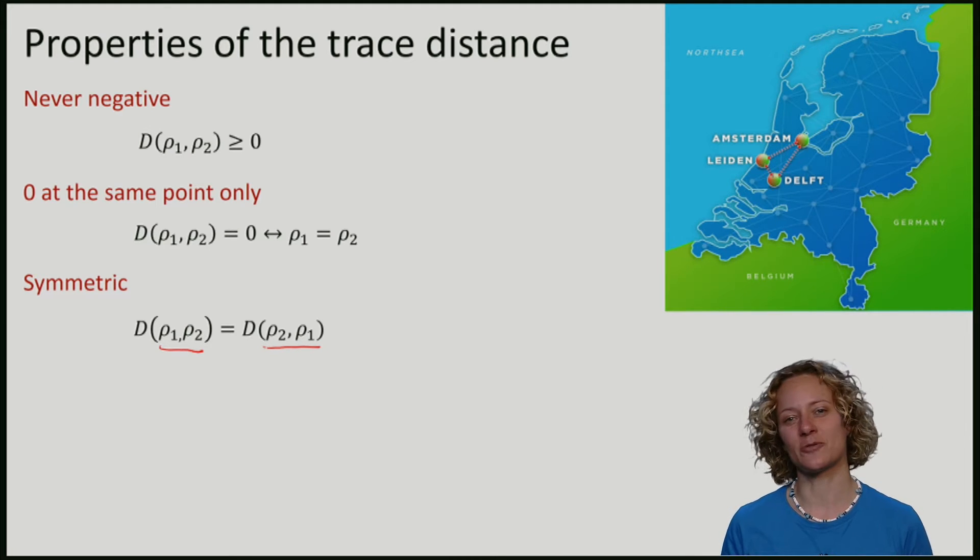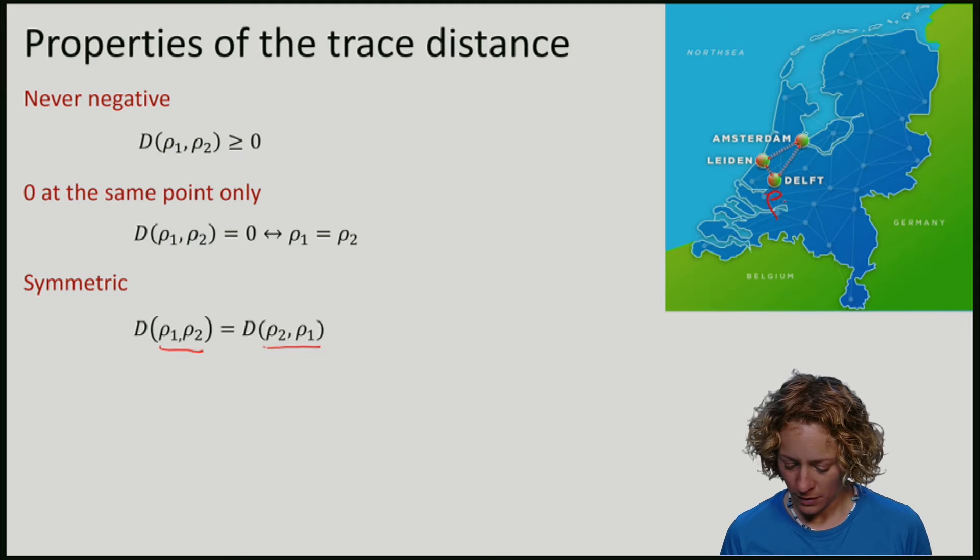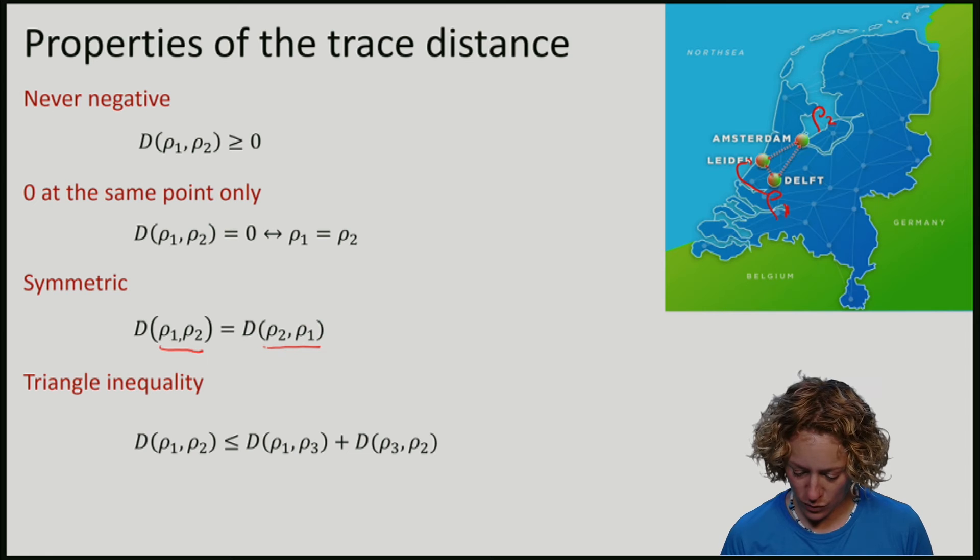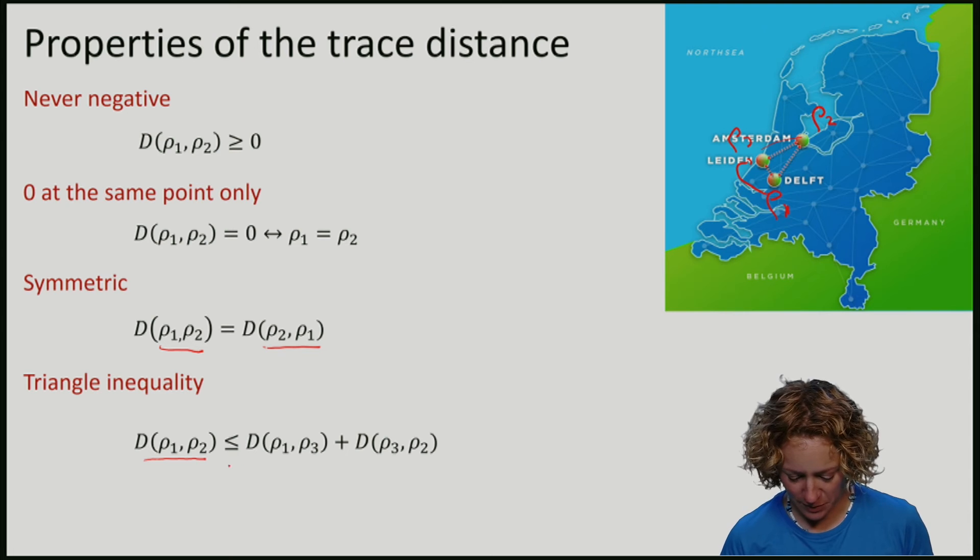Finally, the trace distance satisfies the triangle inequality. The triangle inequality captures the intuitive notion of distance. It means that if I were to walk from Delft to Amsterdam or from ρ1 to ρ2. Or if I first walk from Delft to Leiden, from ρ1 to ρ3 and then onwards from Leiden to Amsterdam, we certainly have that the distance between Delft and Amsterdam is not larger than if I walk by Leiden, meaning the distance between Delft and Leiden and Leiden and Amsterdam.